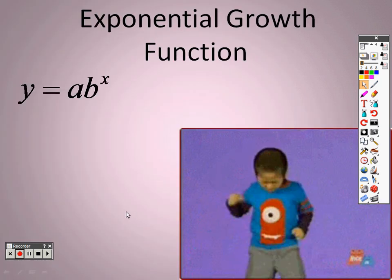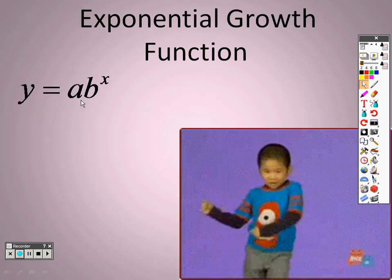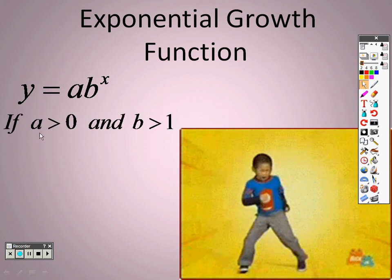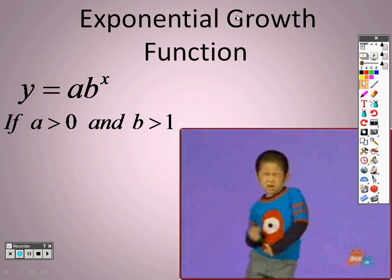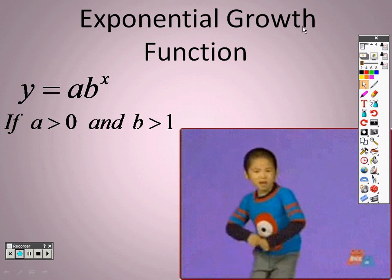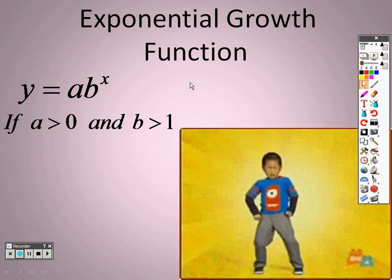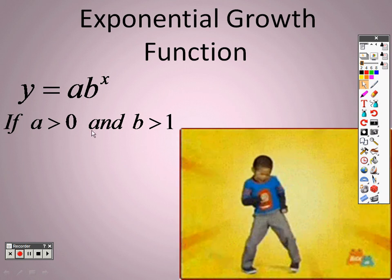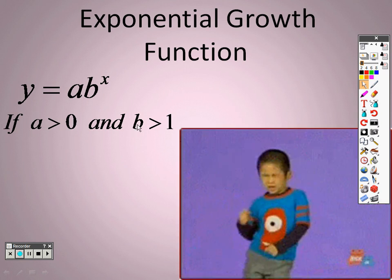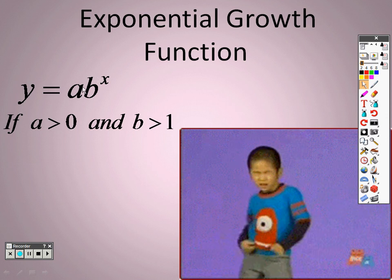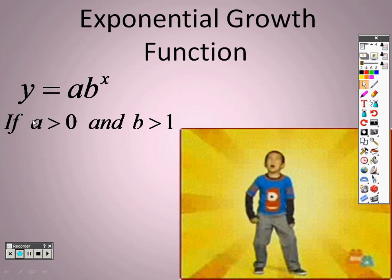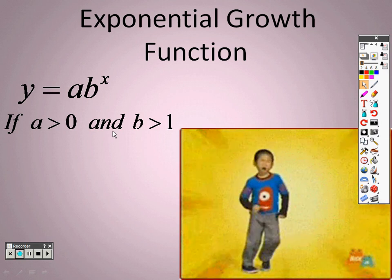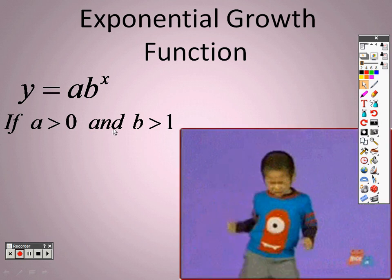The exponential growth function is y equals a times b to the x. For it to be growth, both values need to be positive: a must be greater than zero and b must be greater than one. So a also needs to be positive for it to be a growth function.